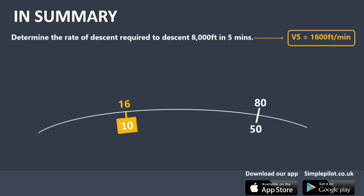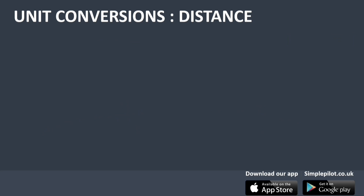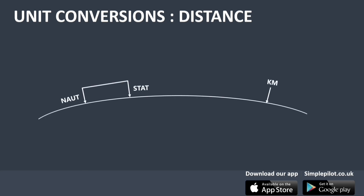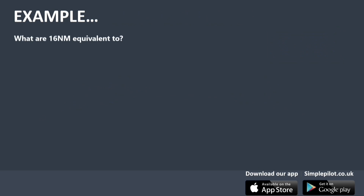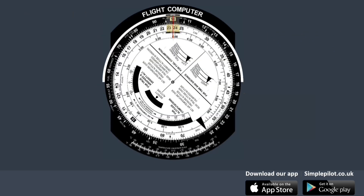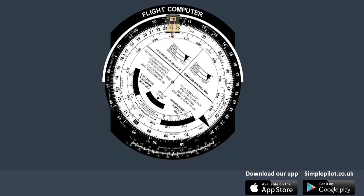Let's continue with unit conversions, starting with distance. On the outer scale, there are markings corresponding to each unit of measurement — normally nautical miles, statute miles, and kilometers. To convert units, align the desired value with its corresponding unit and read the different values expressed in other units. For example, to convert 16 nautical miles into kilometers and statute miles, align 16 with the nautical miles arrow and read 18.4 statute miles and 29.6 kilometers.